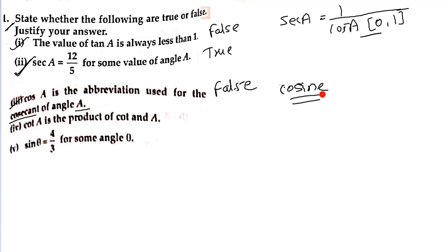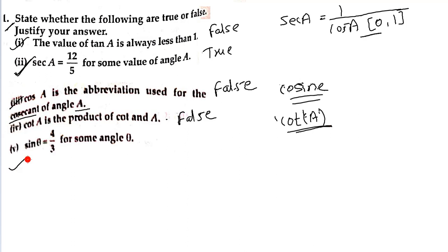Fourth: cot A is the product of cot and A — this is false. Cot is a single word; it is not a product. The angle A that follows it is the angle argument, not a separate multiplied term. Fifth: sin theta equals 4 by 3 for some angle theta — this is also false. Sin and cos values lie in the range 0 to 1. Since 4 by 3 is greater than 1, it cannot be a value of sin theta.